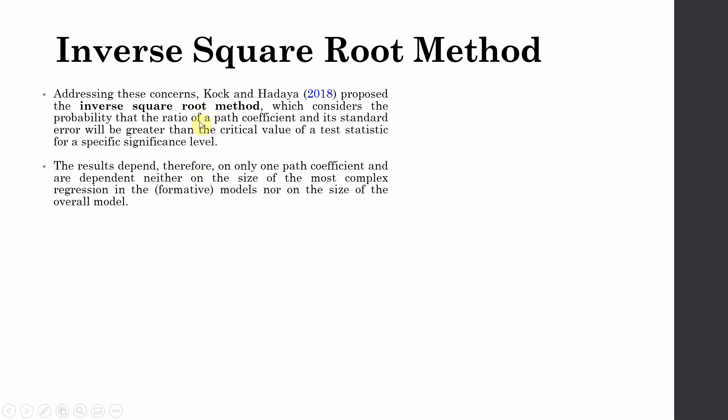We are going to look into how we can calculate sample size using inverse square root method based on the path coefficient and significance level. The results depend not only on the path coefficient and are neither dependent on the size of the most complex regression formative model nor on the size of the overall model. They are not just dependent on one single parameter.